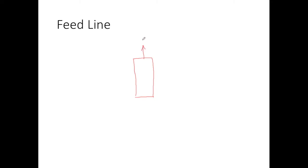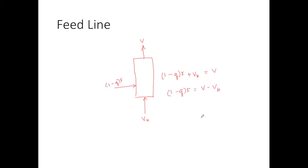To define the operating line for the feed, we perform mass balances on both the rectifying and stripping sections. For the rectifying section, the vapor flow above is V, the vapor flow entering is VB, and the feed contribution is (1 minus Q) times F. Since Q is the moles of liquid, (1 minus Q) gives the vapor mole flow. The mass balance gives (1 minus Q)F plus VB equals V, which rearranges to (1 minus Q)F equals V minus VB.